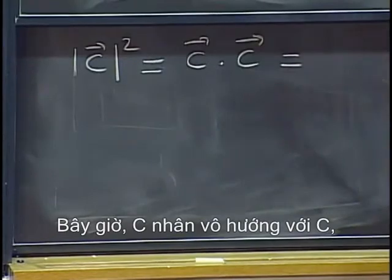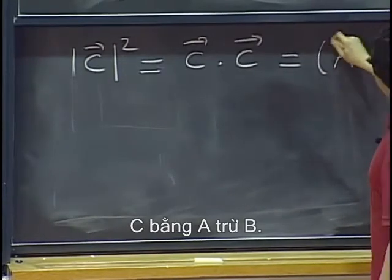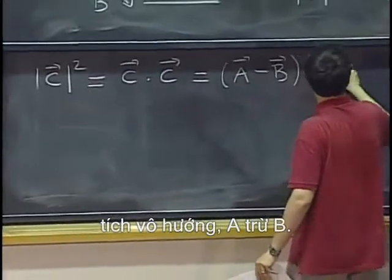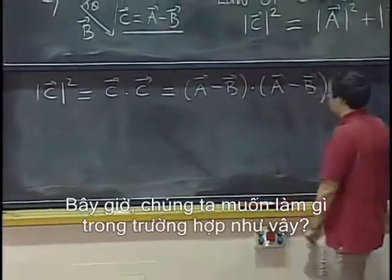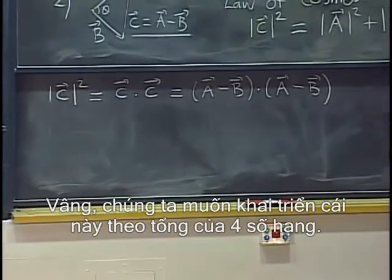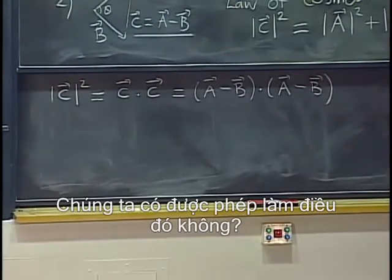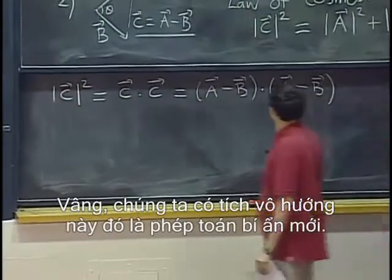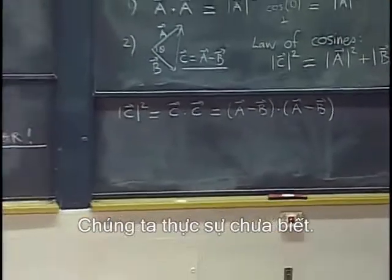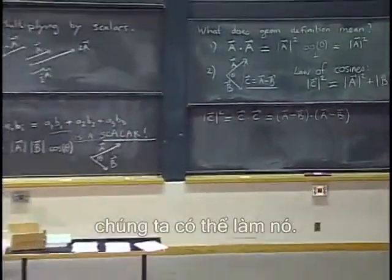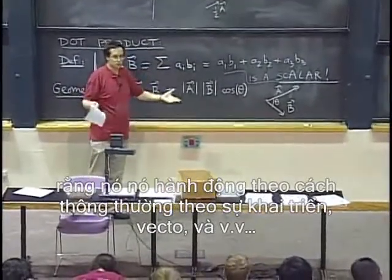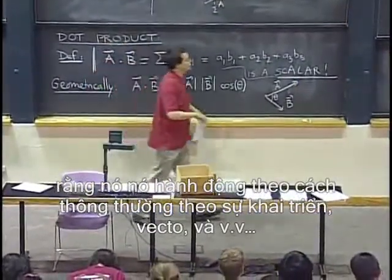So let's try to see how this relates to the dot product. Length c squared is the same thing as c dot c — we have checked that. Now, c dot c, where c equals a minus b, is (a minus b) dot (a minus b). We want to expand this into a sum of four terms. The answer is yes, we can do it — you can check from the component definition that the dot product behaves in the usual way in terms of expanding, factoring, and so on.